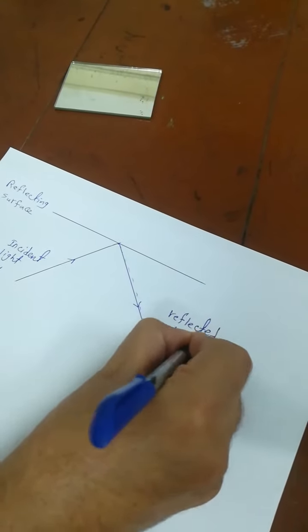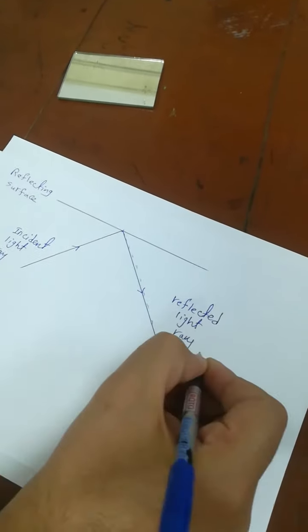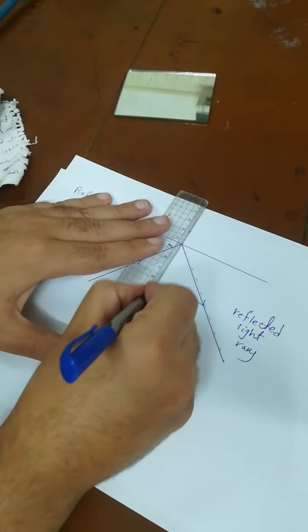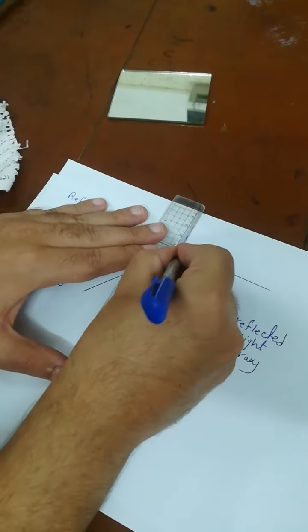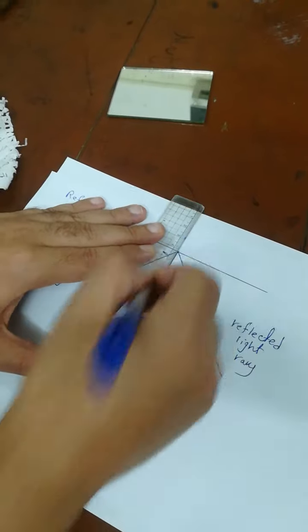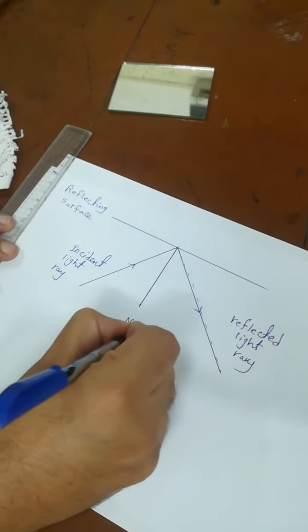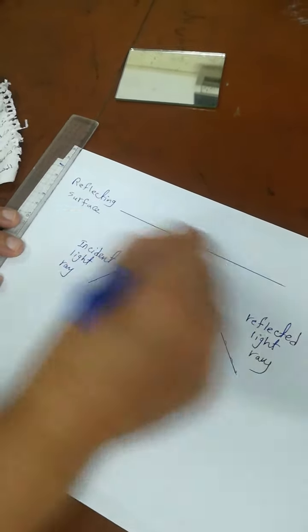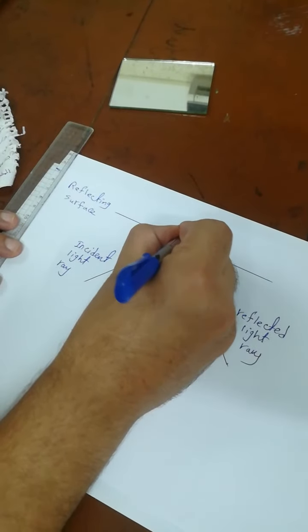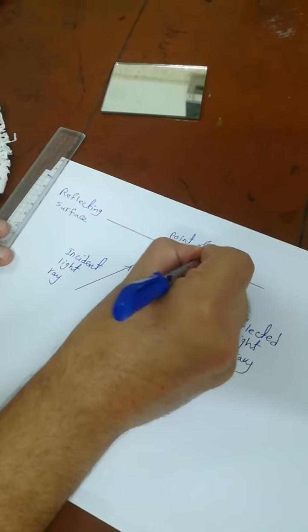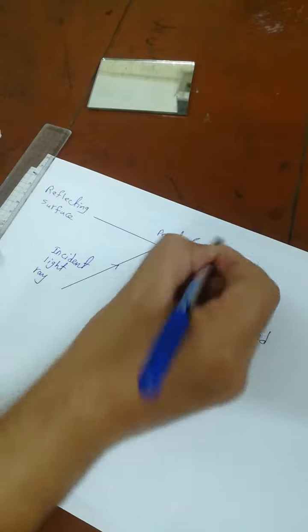Like in our practical activity, if we have a normal, which is a line perpendicular to the reflecting surface at the point of incidence, we have here two angles.